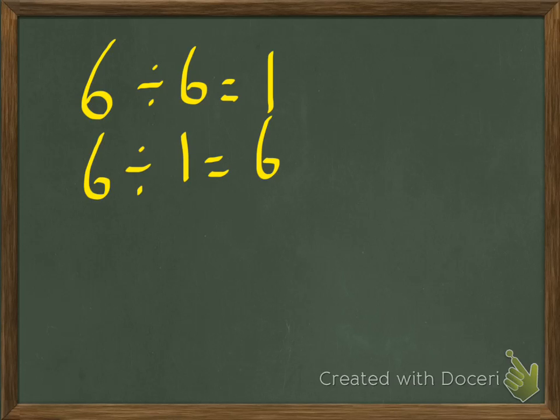And I'll do 2 more. So 6 divided by 6, that's 1. 6 divided by 1 equals 6, but unfortunately, 6 can also be divided by 2, or in fact, 6 can be divided by 3. So 6 is not a prime number.